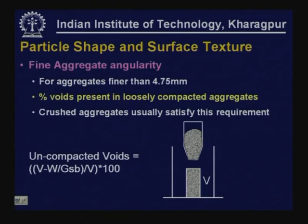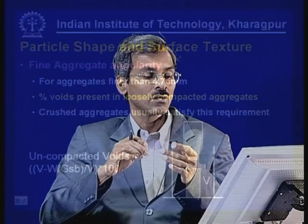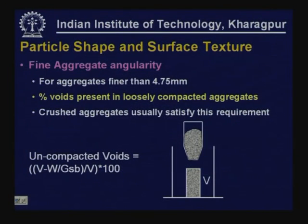Fine aggregate angularity is measured by the voids present in loosely compacted fine aggregates. Fine aggregates are poured into a cylinder of fixed volume from a certain height. Knowing the volume, weight, and bulk specific gravity, the uncompacted voids content is calculated as a representation of fine aggregate angularity.